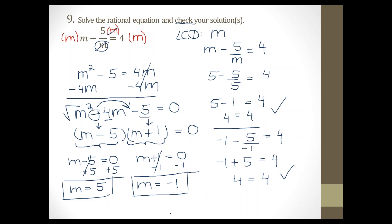On the review and test, you would type the solutions separated by a comma. It doesn't matter what order, though mathematically it's preferred to write the smaller number first: negative 1, 5. Make sure you read the instructions of every single question.